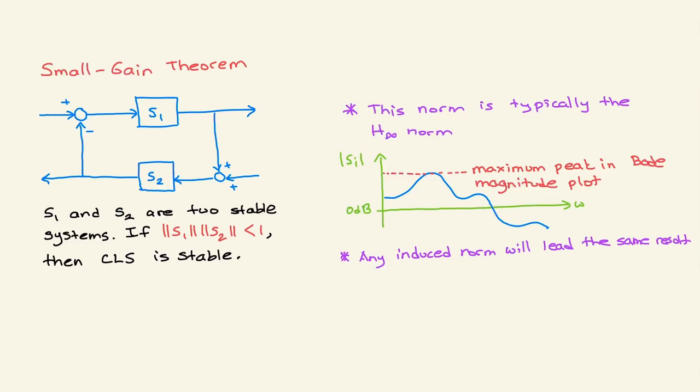I would like to talk about the small gain theorem — a very useful theorem to assess stability of a closed-loop system. You can apply this to linear systems and to nonlinear systems. I will give the statement of this theorem and then focus on a couple of applications.